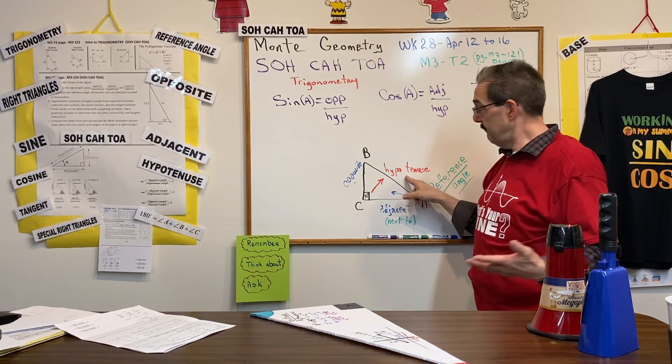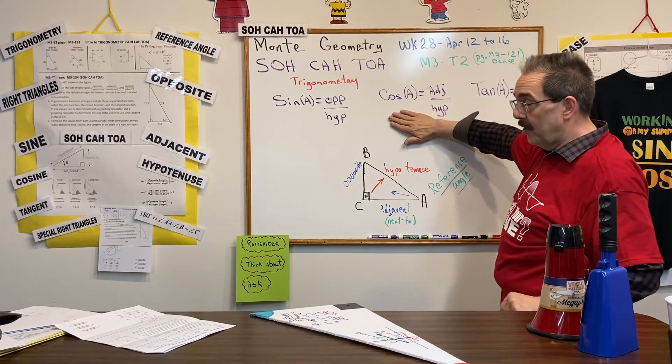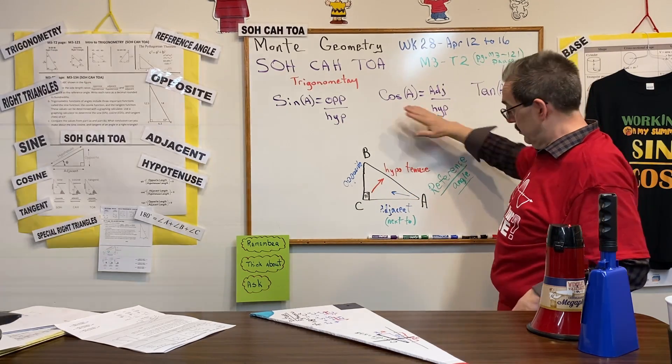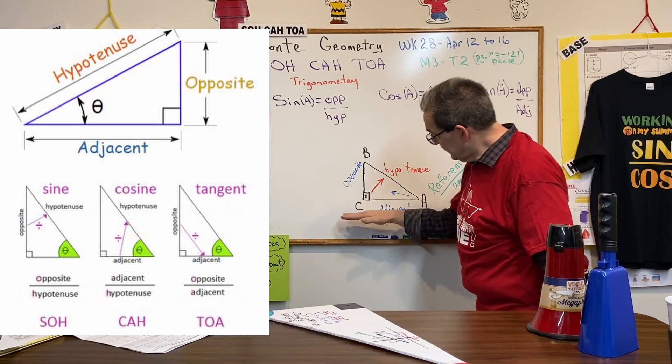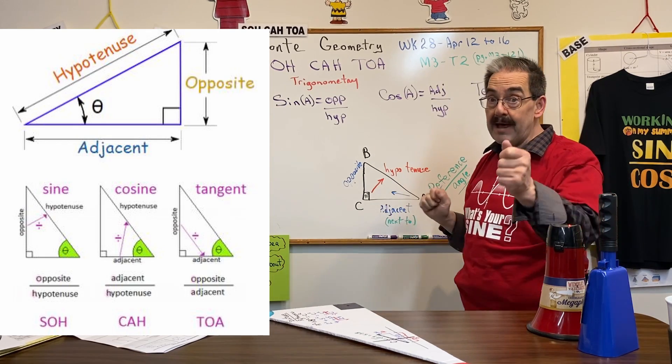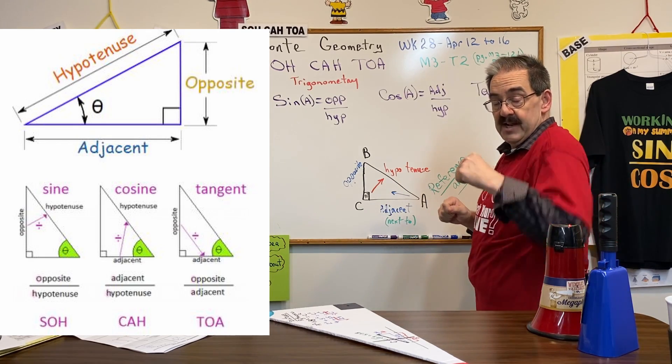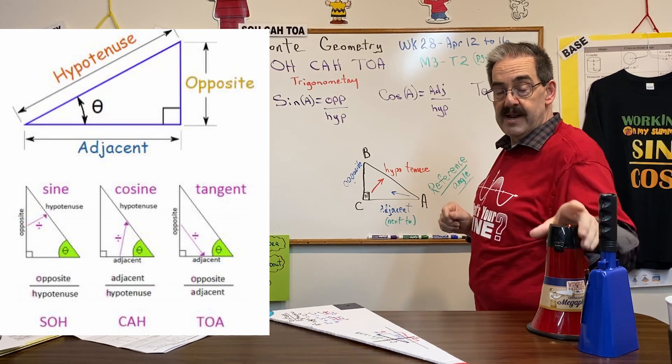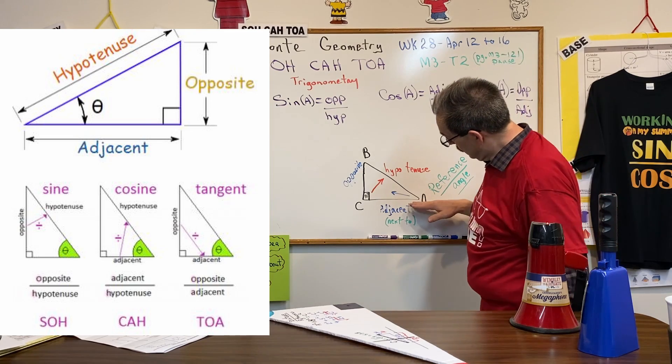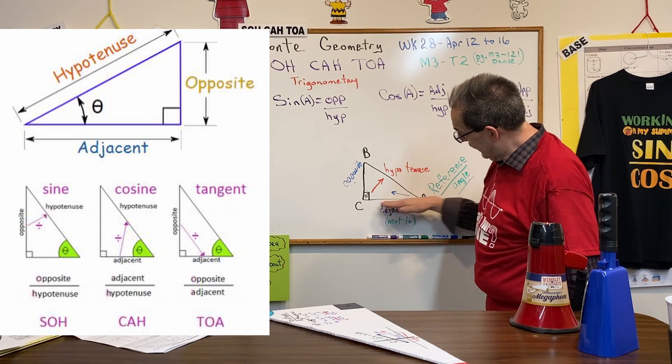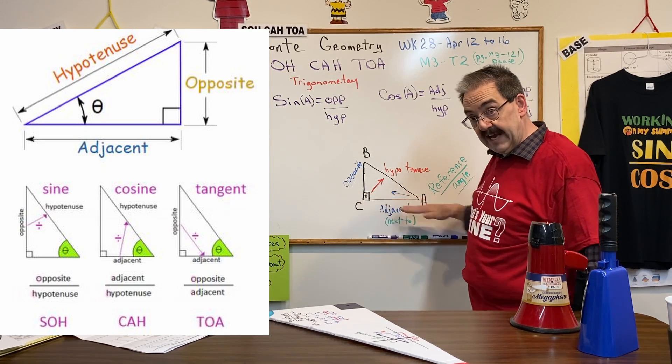Okay, the cosine of an angle, again using A as the reference, is the adjacent—and in mathematics adjacent means next to, I am next to the megaphone, next to—so next to angle A is the adjacent side over the hypotenuse. CAH.